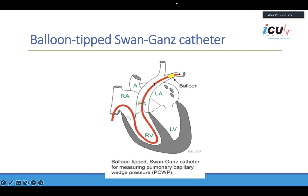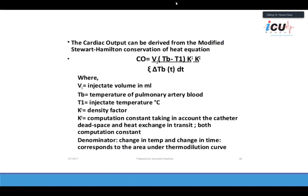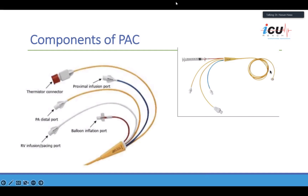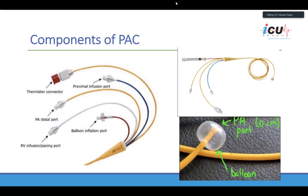Once the balloon is inflated, you are separating this side of the catheter from the forward flow, so the forward flow reflects the pressure in the left atrium. If there is no problem with the mitral valve, it also reflects the left ventricle. The components of the PA catheter include the balloon-tipped catheter, various ports, a thermostat connector sensor, and the balloon inflation port.